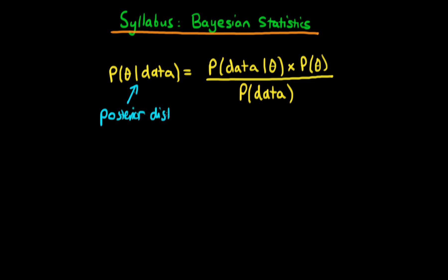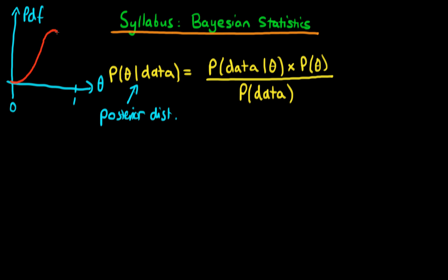What does a posterior distribution actually mean? The idea is that what we're trying to do is assign a probability density value to all the different values of theta. What we'll get out in the end is, for all different values of theta which theta could potentially take on, a value of the PDF. In the example where theta is constrained to lie between 0 and 1 — for example if theta was some sort of probability value — we might actually get out a posterior distribution which looks something like this red line which I've drawn here.